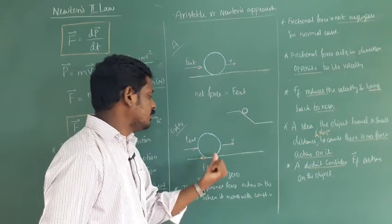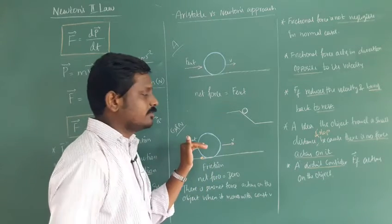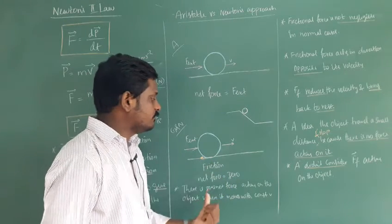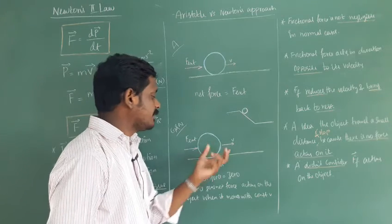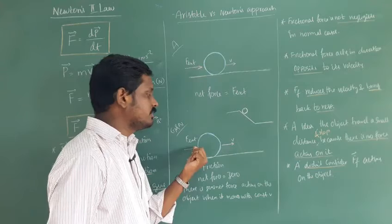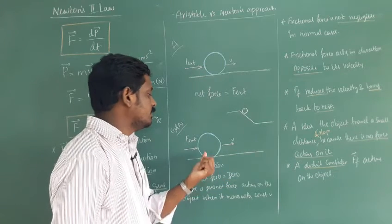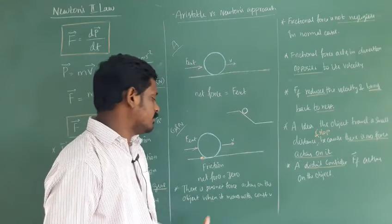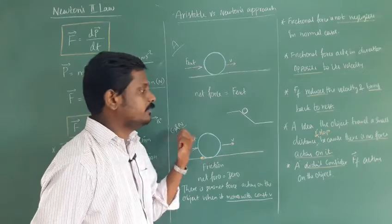The frictional force reduces the velocity of the object and brings it to rest. So when an external force acts in one direction and frictional force acts in the opposite direction, the net force is zero. Therefore, when an object moves with constant velocity, the net force acting on it is zero. This is the idea of Galileo and Newton.